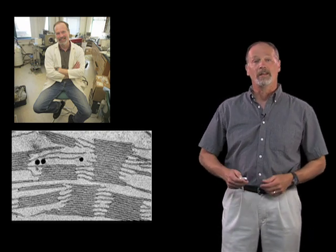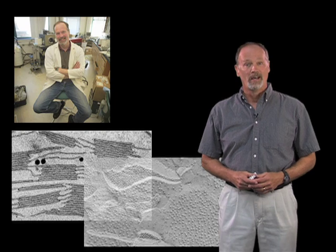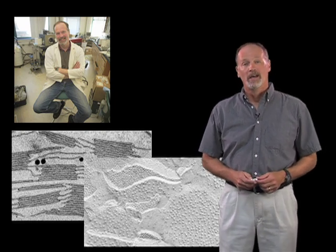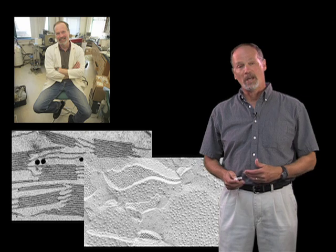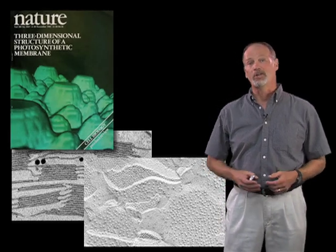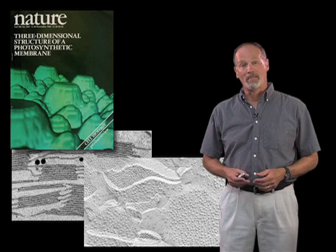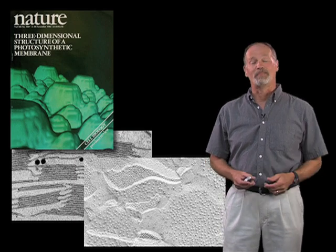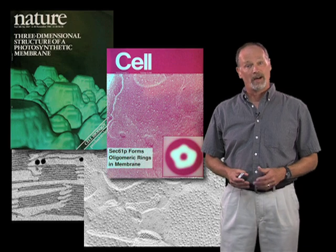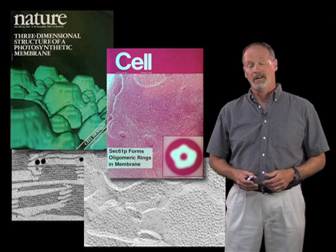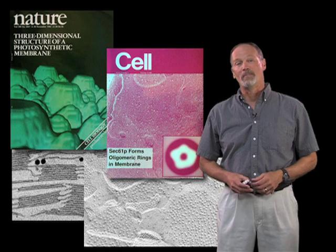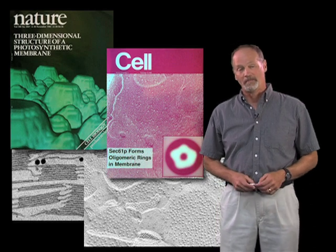I use the electron microscope — that's where my training is. I've used a technique called freeze etching to look inside those membranes, and I've also used image analysis and reconstruction to develop things like a three-dimensional model of a photosynthetic membrane. This ended up on the cover of Nature. More recently, my laboratory has also worked on the translocon, which is a little channel by which proteins leave the ribosome and enter the rough endoplasmic reticulum.